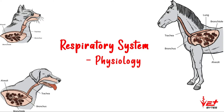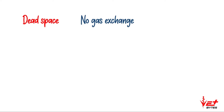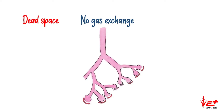Hello everyone, welcome back. In this video we are going to see about dead space, pulmonary volumes and capacities. Dead space is the place where no gas exchange takes place. We know the trachea bifurcates into bronchi.